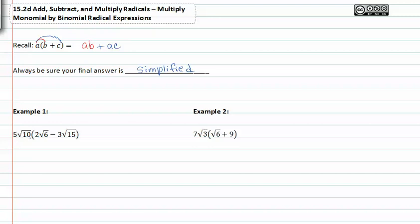Only now we're multiplying with a radical. So let's go ahead and distribute five root ten to two root six. Two times five is ten and the square root of ten times the square root of six gives us the square root of sixty.